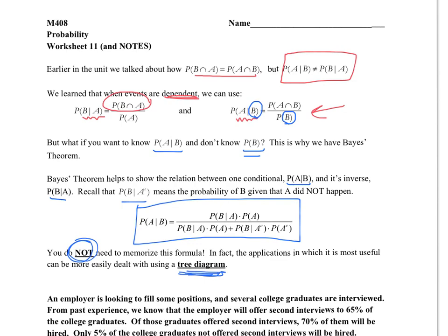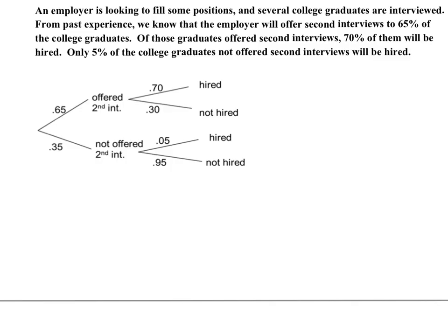In this first example, an employer is looking to fill some positions and several college graduates are interviewed. From past experience, the employer will offer second interviews to 75% of the college graduates. Of those graduates offered second interviews, 70% will be hired. Only 5% of the college graduates not offered second interviews will be hired. When we read the problem and hear multiple levels of information — this or this, and then based on that, this or this — each option has branches that fall off of it. That's conditional probability, and that's when you know you want to use Bayes' theorem.